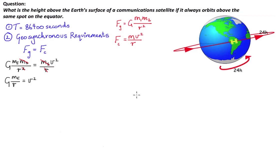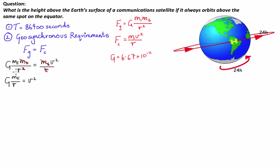We're getting somewhere. The next step is to list the variables we already know to input into this simplified formula. The universal gravitational constant G is equal to 6.67 times 10 to the negative 11. The mass of the Earth, which people have worked out before us, is 5.98 times 10 to the power of 24 kilograms.